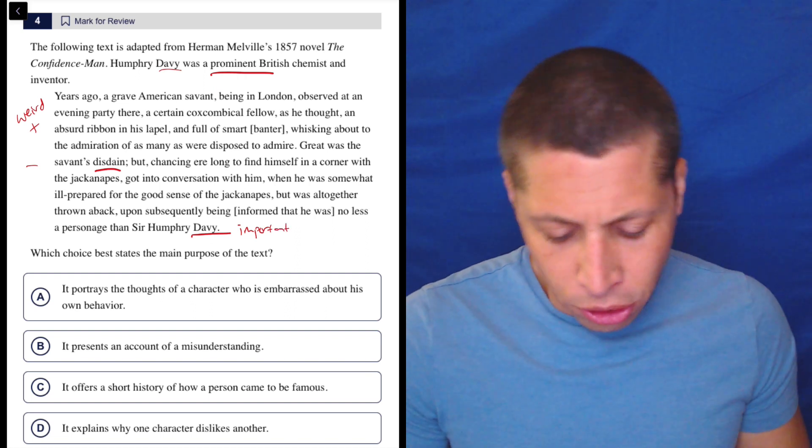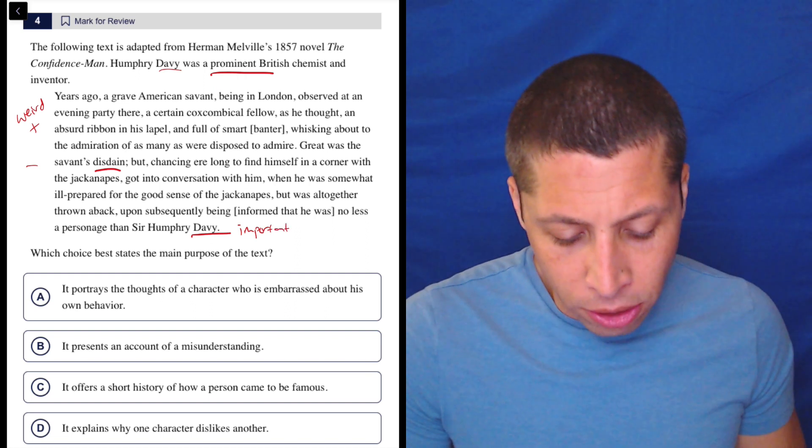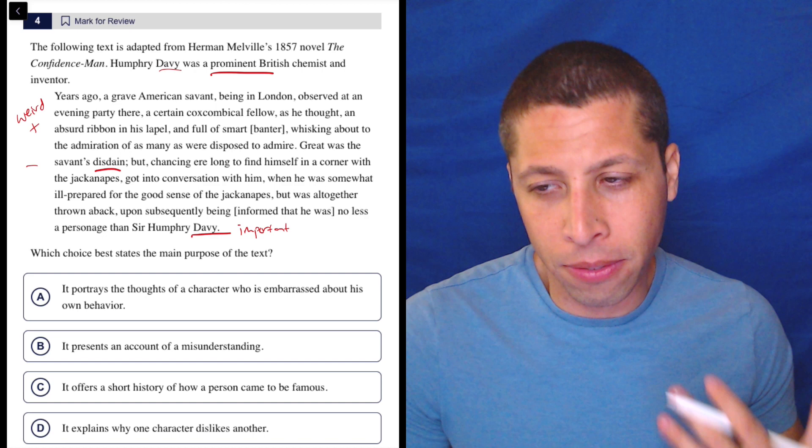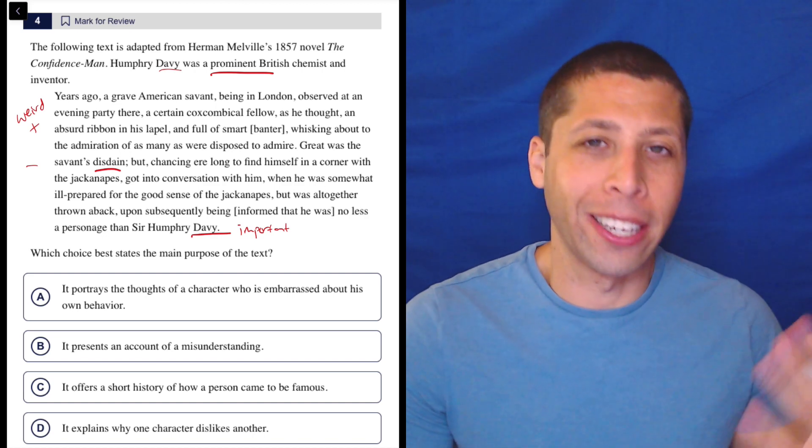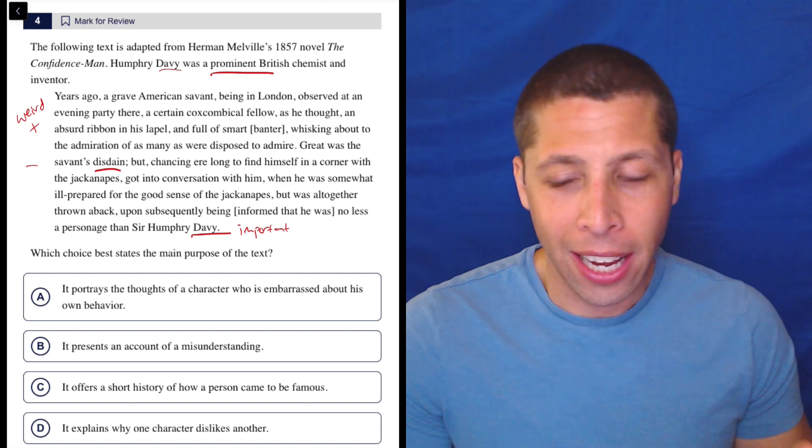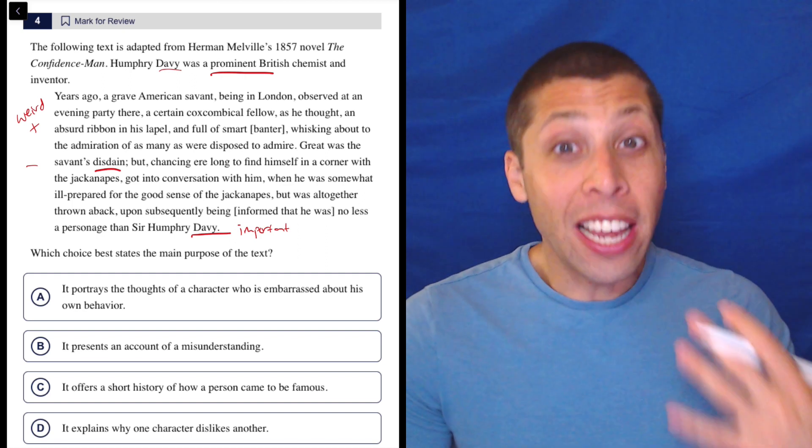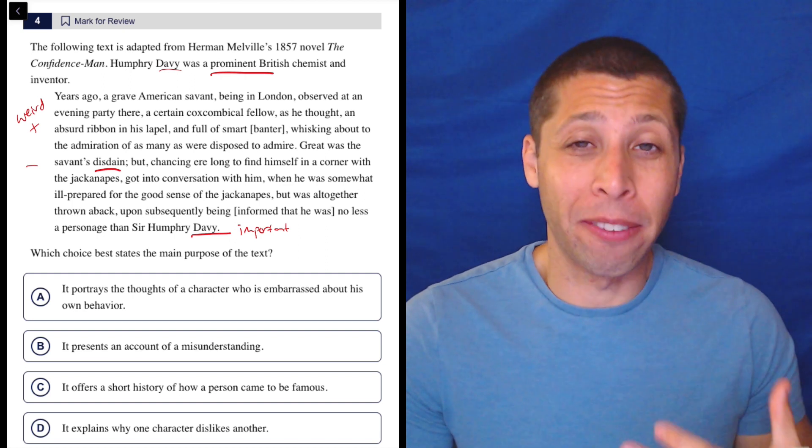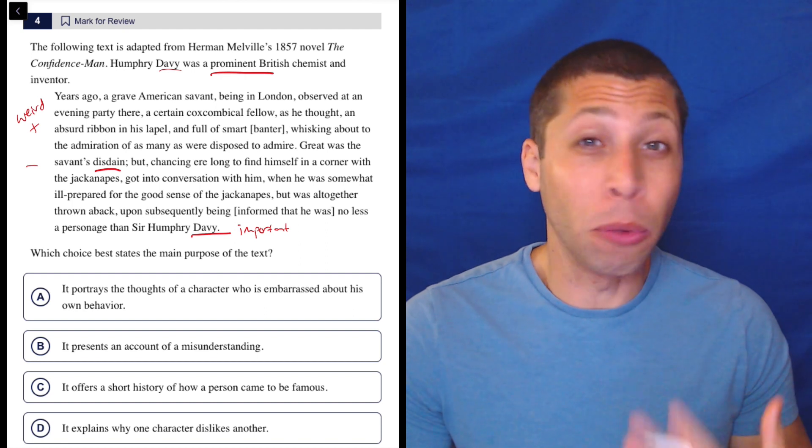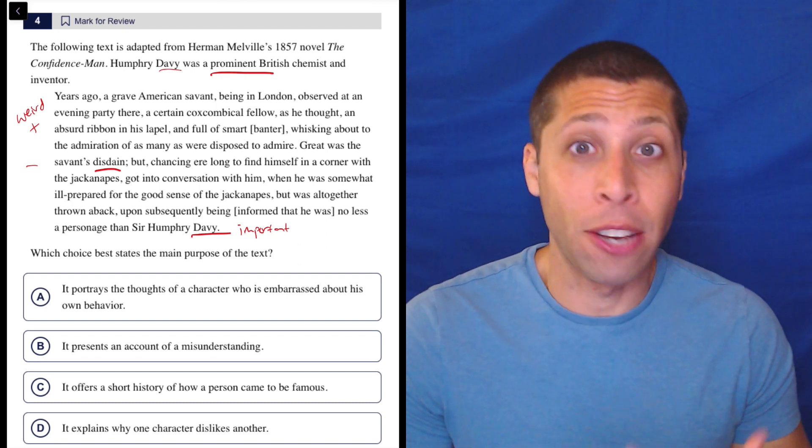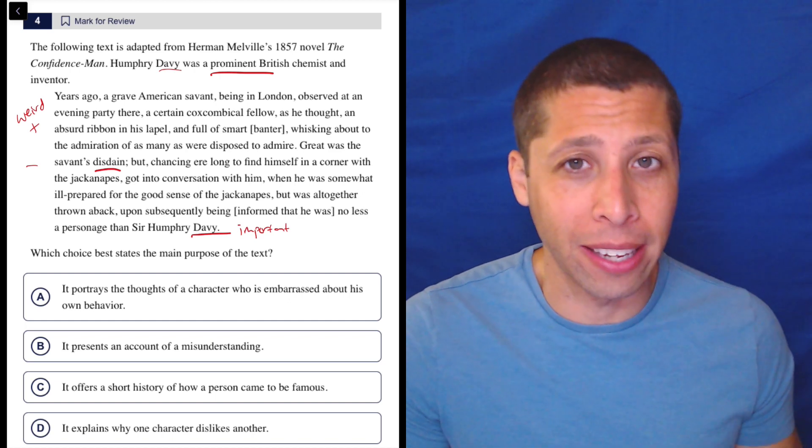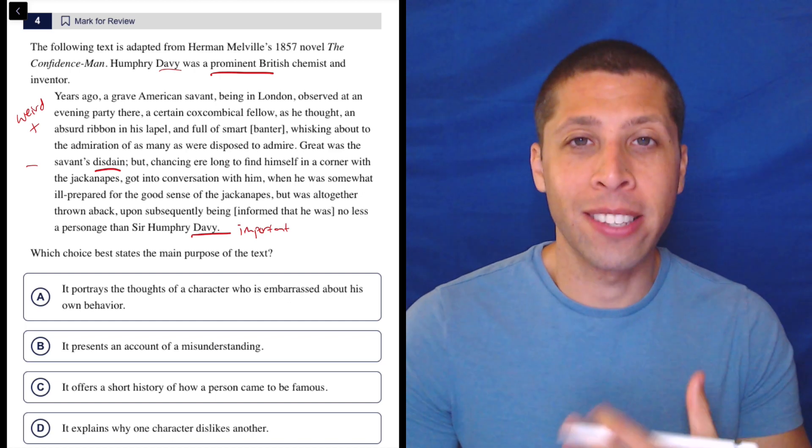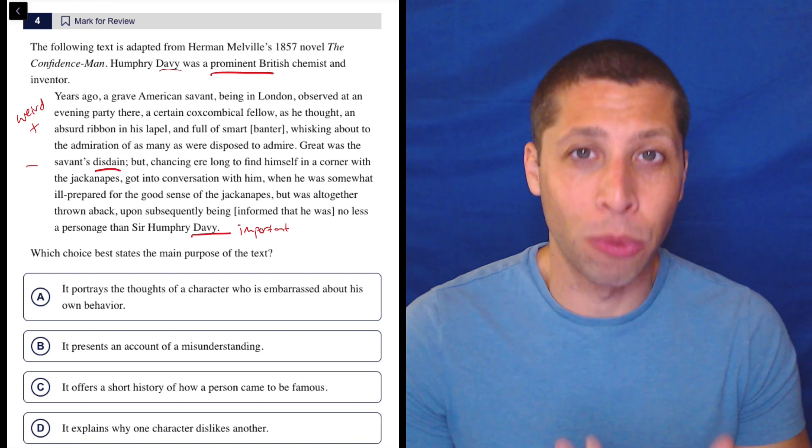So disdain, they're basically saying that this savant, this smart person, this guy who's kind of a weird smart guy, is disdainful of other people. Basically thinks he's kind of superior and he's kind of being rude, maybe, to other people. Disdain is hatred. So here, I don't know that he's hating on all the other people, but I think it suggests that he is being kind of obnoxious and rude.